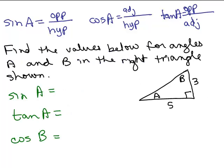The three main functions you have to remember are the sine, the cosine, and the tangent. Now let's do a problem: find the values below for angles A and B in the right triangle shown. I've got a right triangle with two sides given but not the third side, so we need to find the hypotenuse.